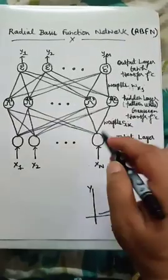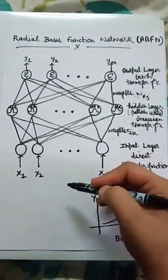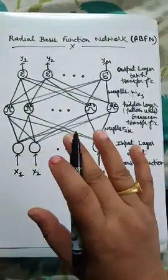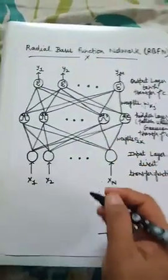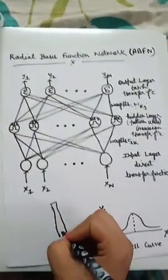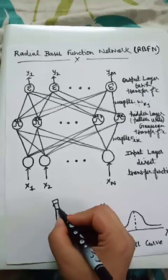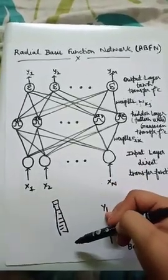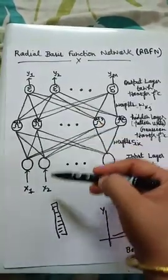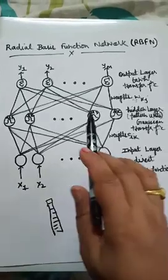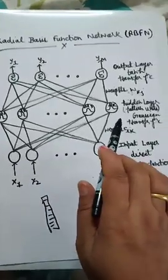So the first layer is the input layer. The input vector is basically an n-dimensional vector like this. The entire input vector is shown to each of the RBF neurons.